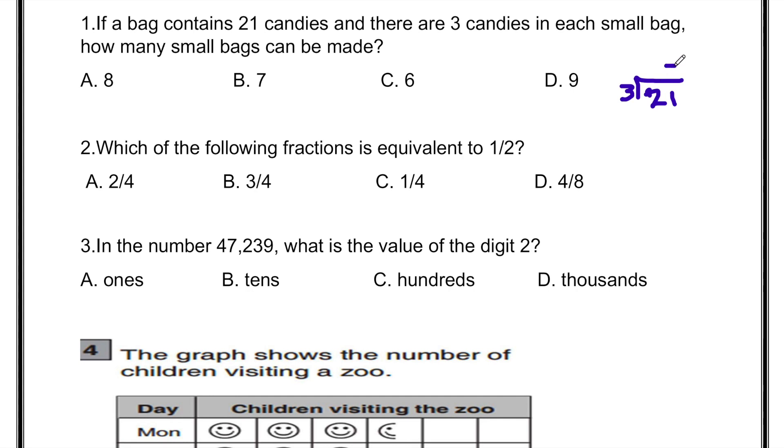So 3 sevens are 21. 1 minus 1 is 0, 2 minus 2 is 0. So the answer is 7.